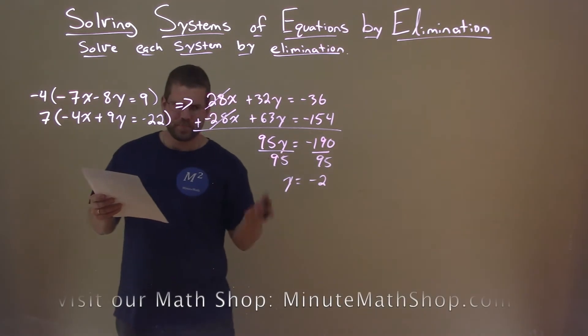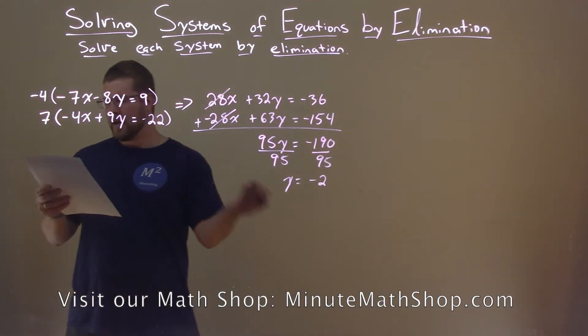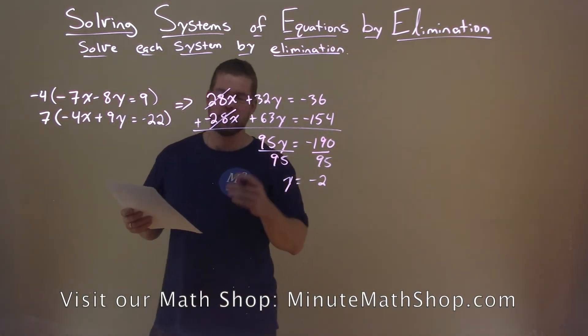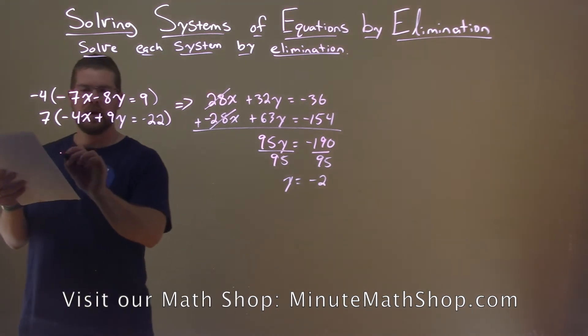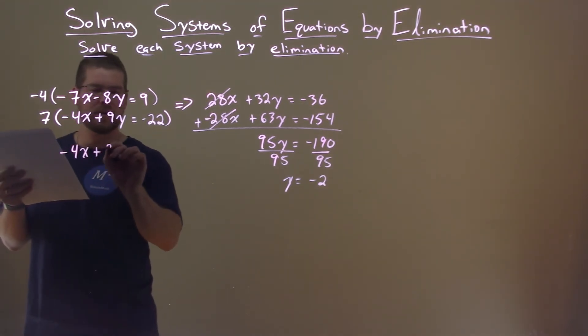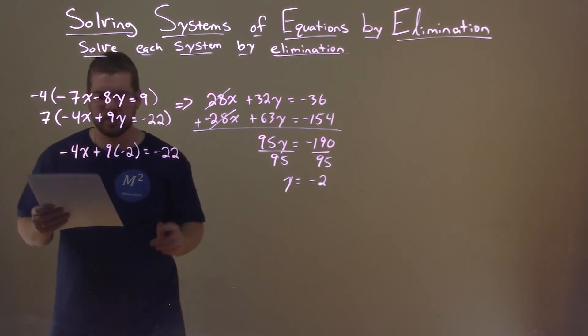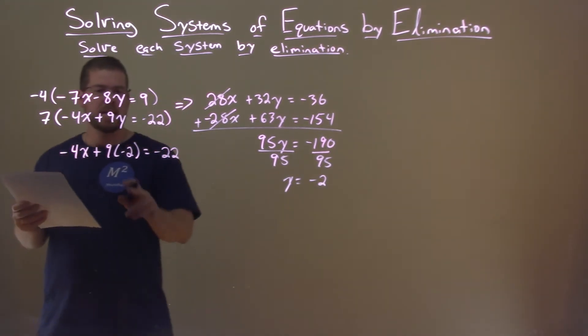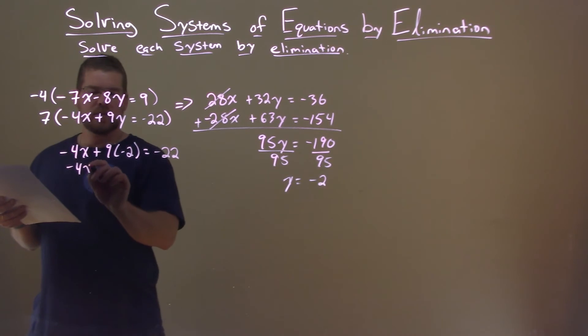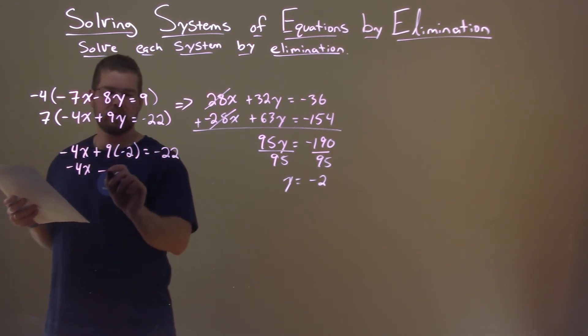But we're not done. We need to take that negative 2 and plug it into one of our equations and solve for x. Let's choose the second one. Minus 4x plus 9 times negative 2 equals negative 22. All right. Well, negative 4x here. 9 times negative 2 is minus 18.